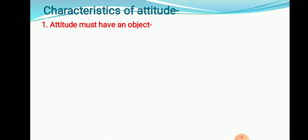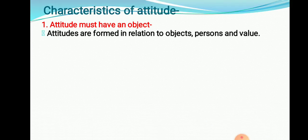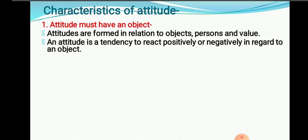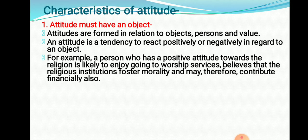Now the main part of attitude is its characteristics. The first characteristic: attitude must have an object. Attitudes are formed in relation to a particular object, person, or values. Attitude is a tendency to react positively or negatively in regard to a particular object. For example, a person who has a positive attitude toward religion is likely to enjoy the worship service and beliefs of a religious institution and will try to contribute to it.